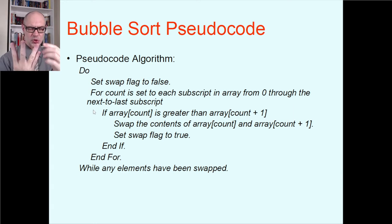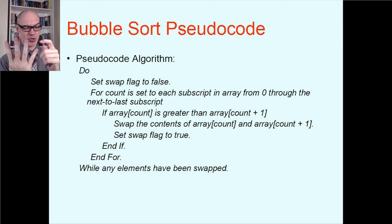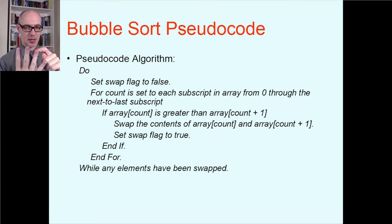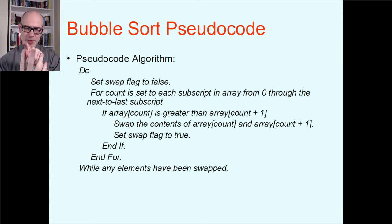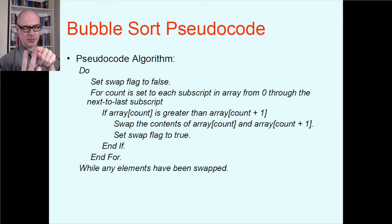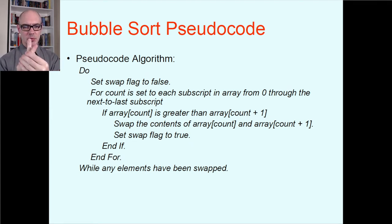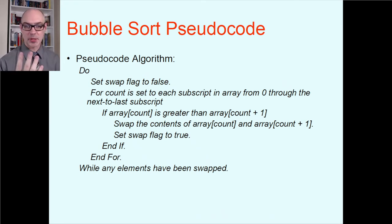You start off by setting the swap flag to false — so far, no swaps have been made. Then you have a for loop counting from zero to one less than the last subscript. You're looking at every adjacent pair; you don't check the last element against something after it since there's nothing there. So the loop goes from zero through one less than the last subscript.